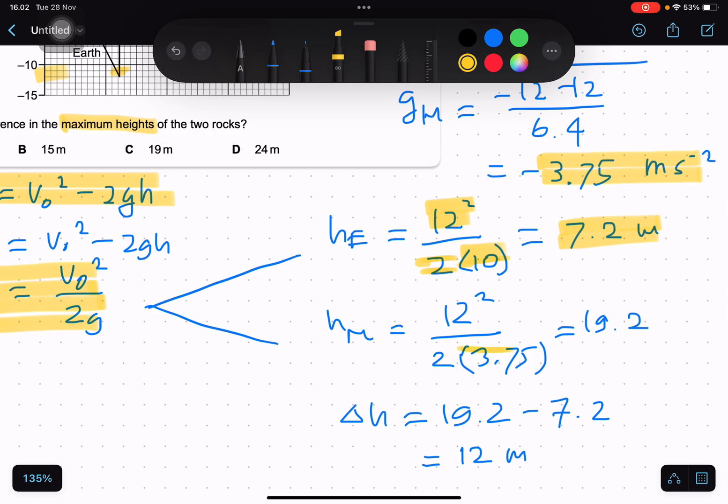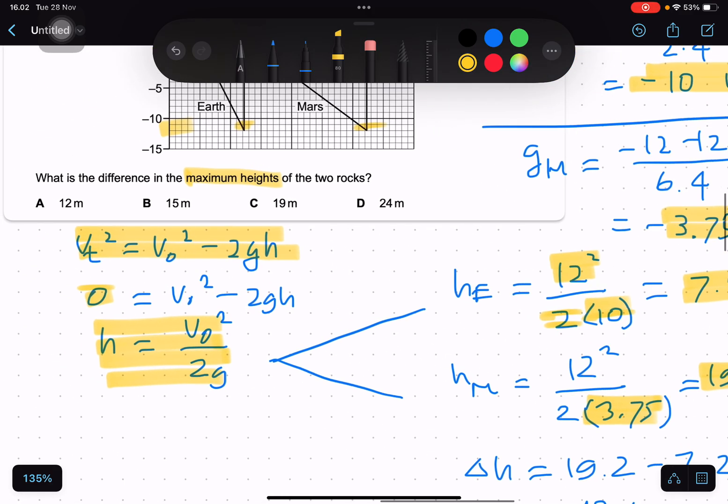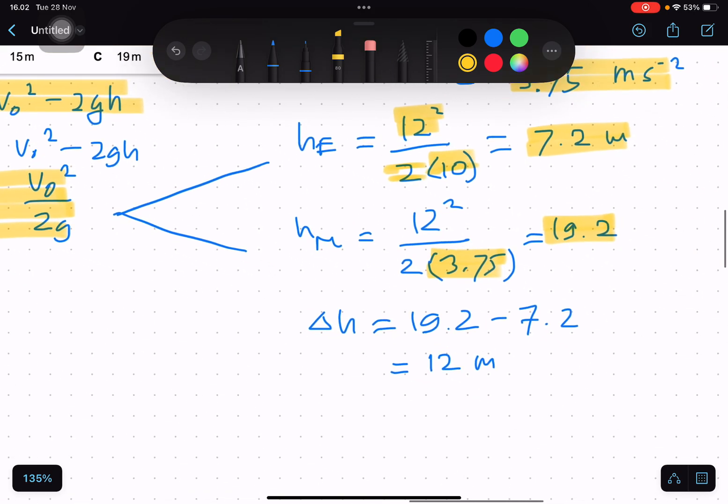On Mars, with different gravitational acceleration of 3.75, we get 19.2 meters. So the difference in the maximum height is 19.2 minus 7.2, which equals 12 meters.